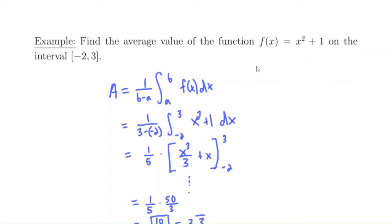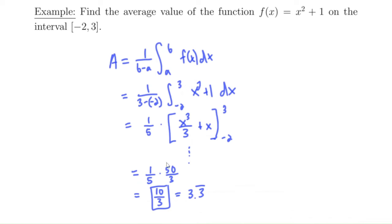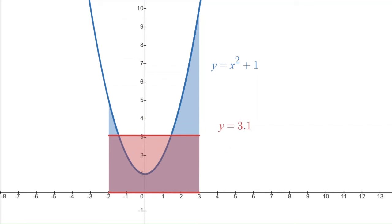So the average value of this function is 10/3, or 3 and 1/3. We calculated the integral (50/3) and divided by the length of the interval (5), giving us 10/3 or 3.3 repeating. Over in Desmos, the height of 3.33 is the exact value that makes the area of the red shaded rectangle equal to the area of the blue shaded region.